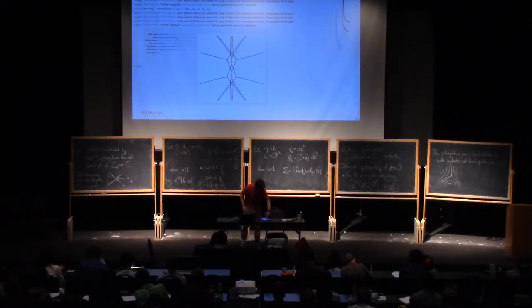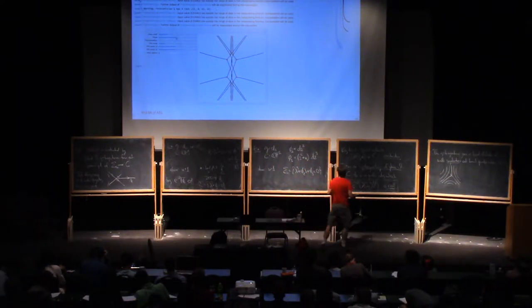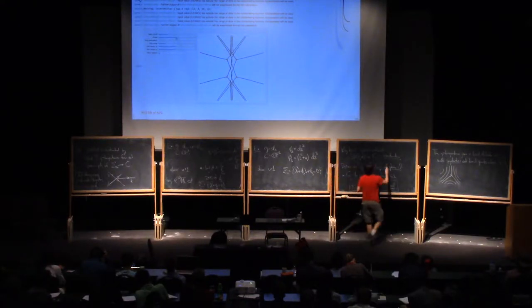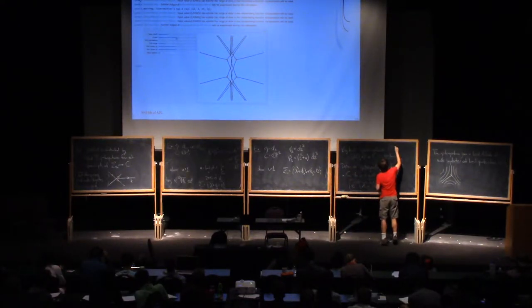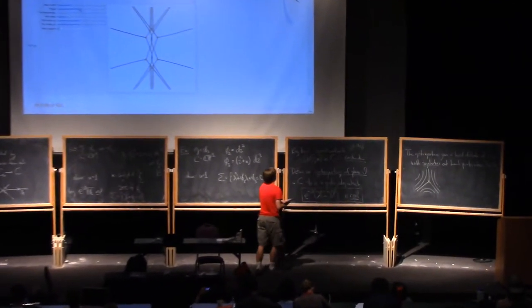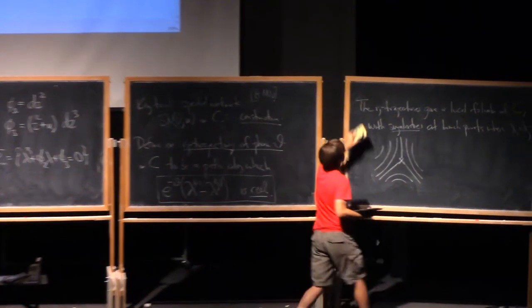So this is our new notion of a spectral network. It's introduced in a paper of Gratton, Moore, and me.